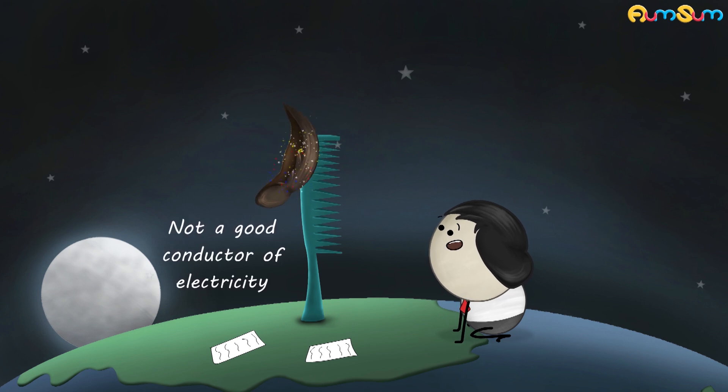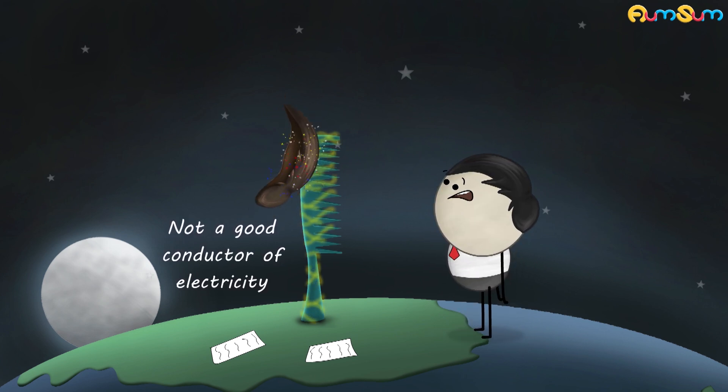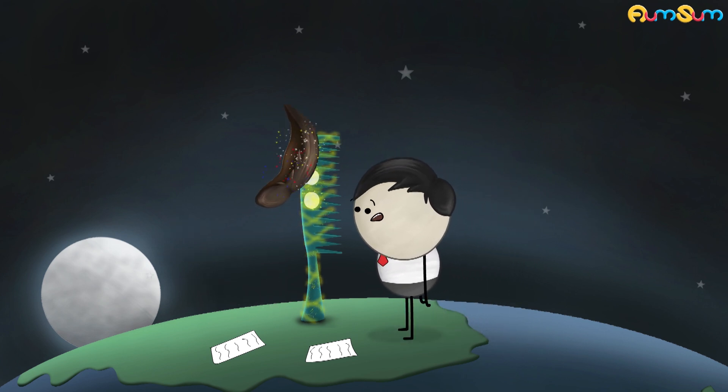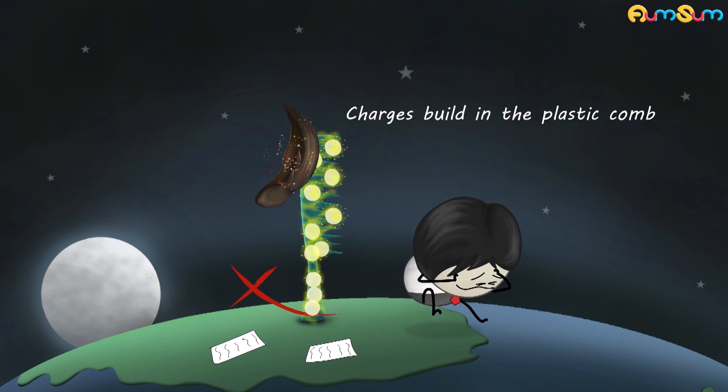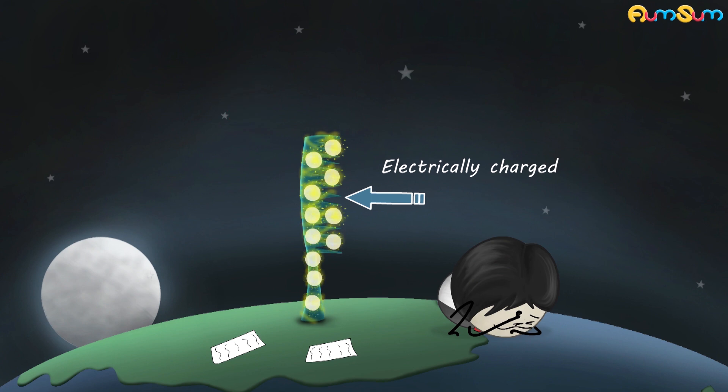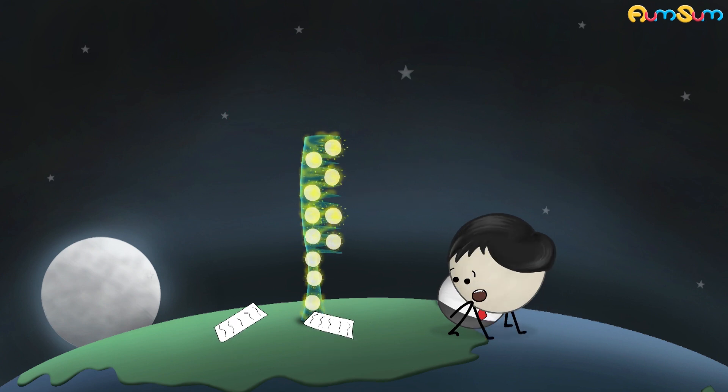It is because plastic is not a good conductor of electricity. It does not allow the electric charges to flow through it onto the earth. As a result, the charges build in the plastic comb, making it electrically charged and enabling it to attract the pieces of paper.